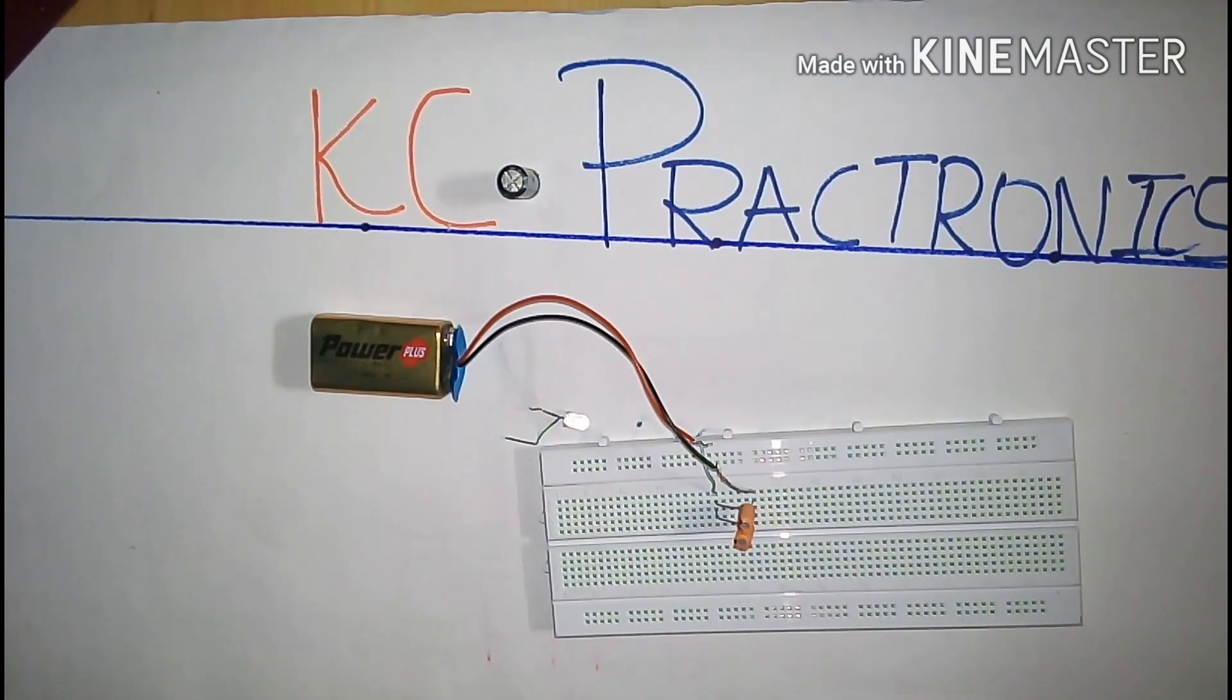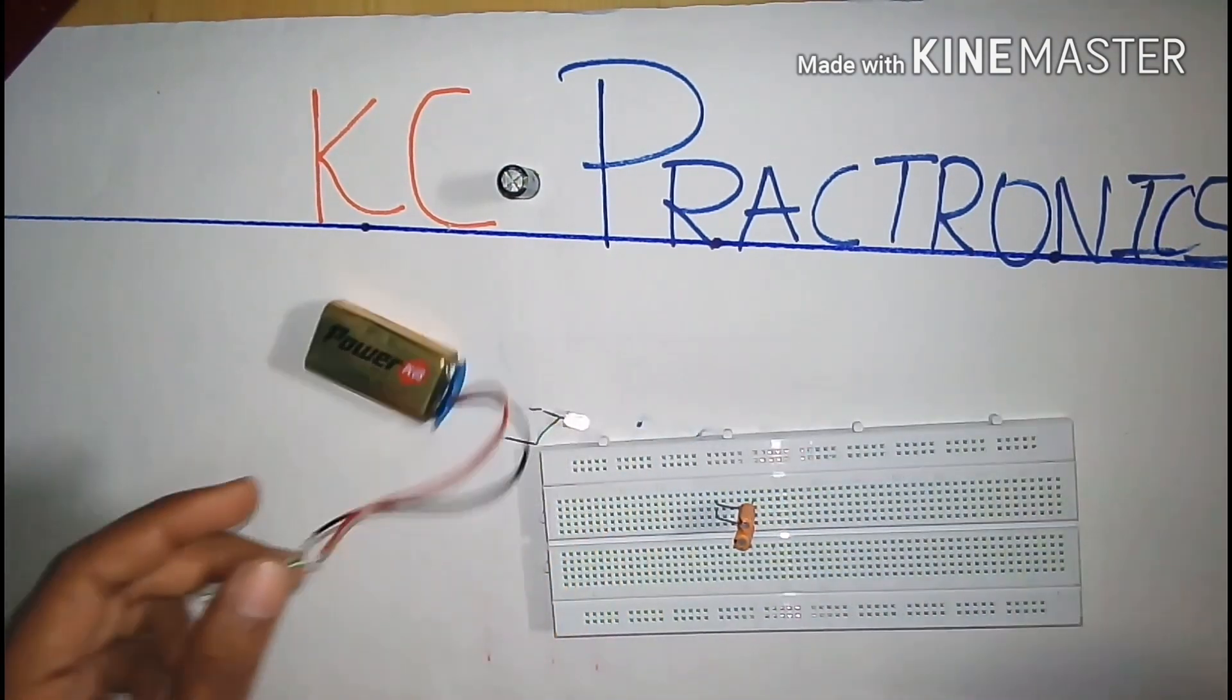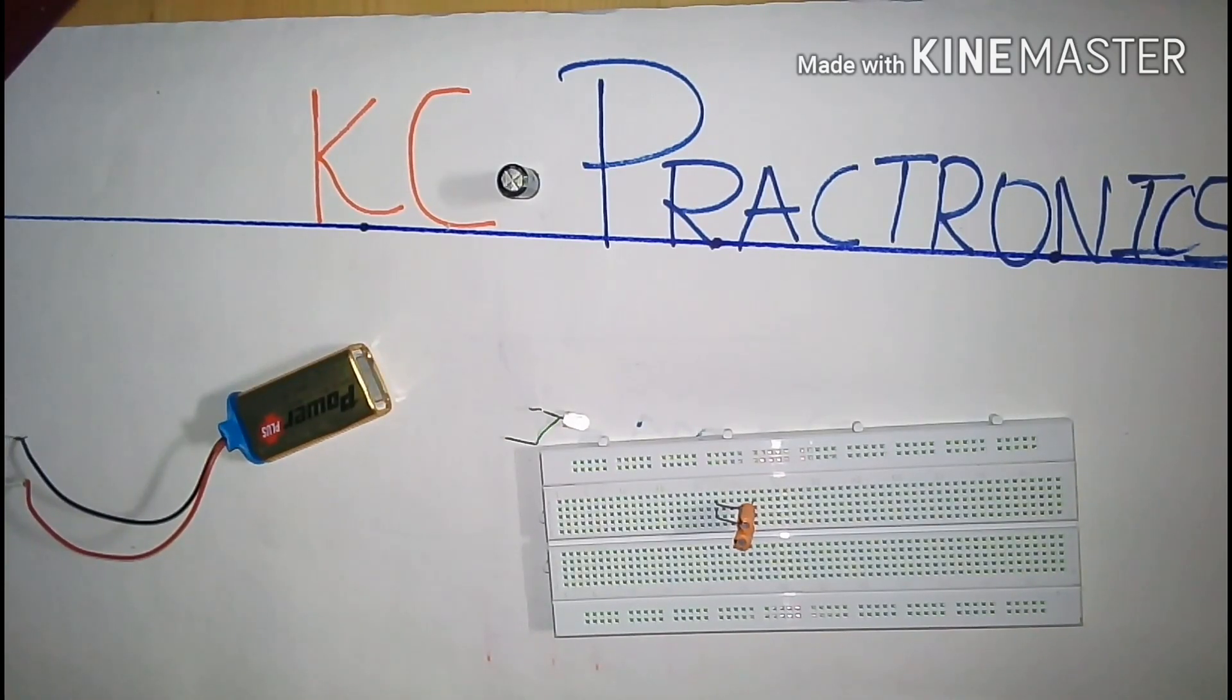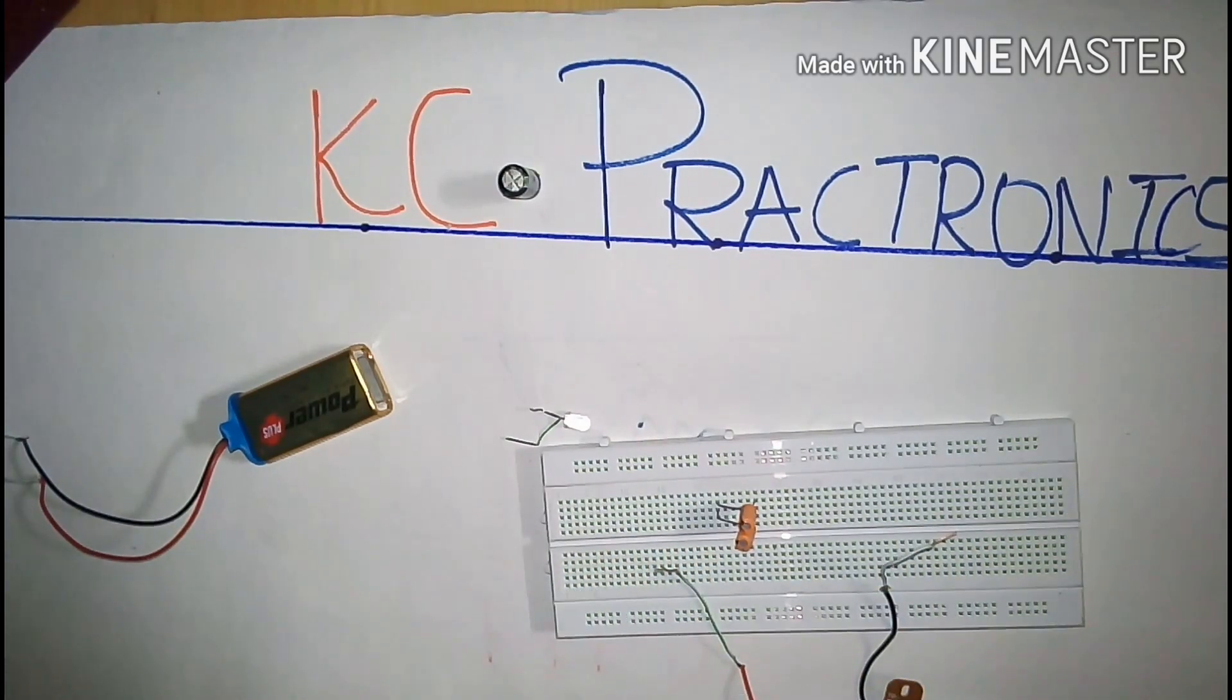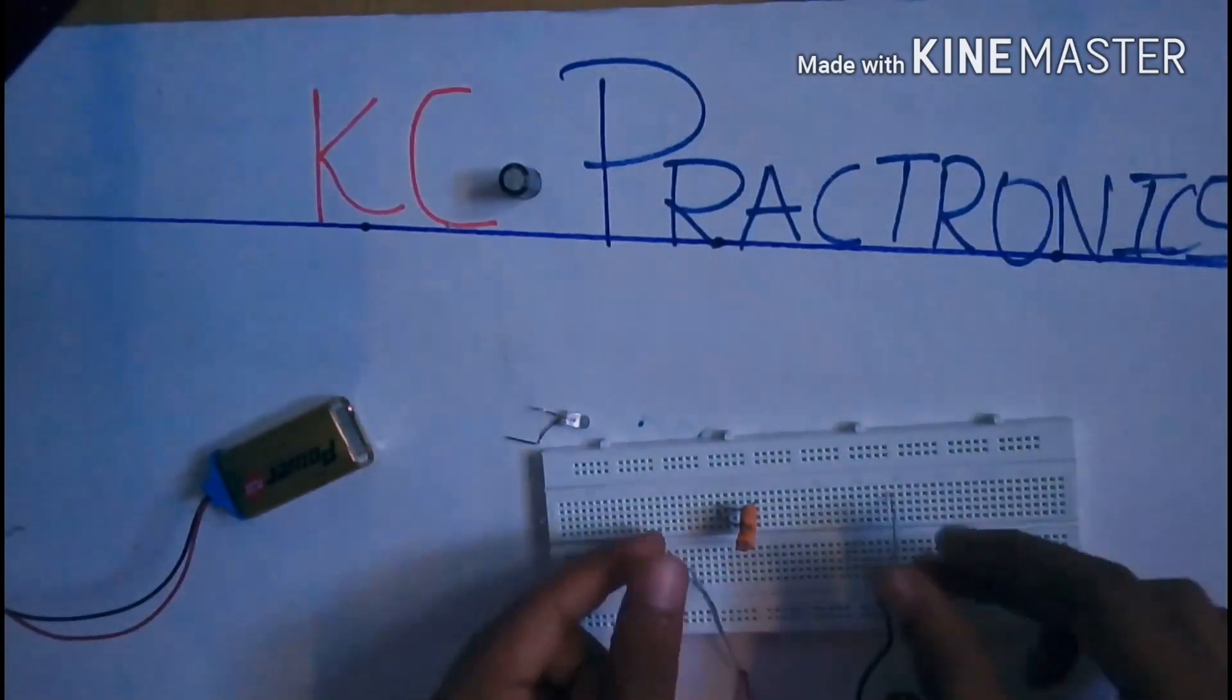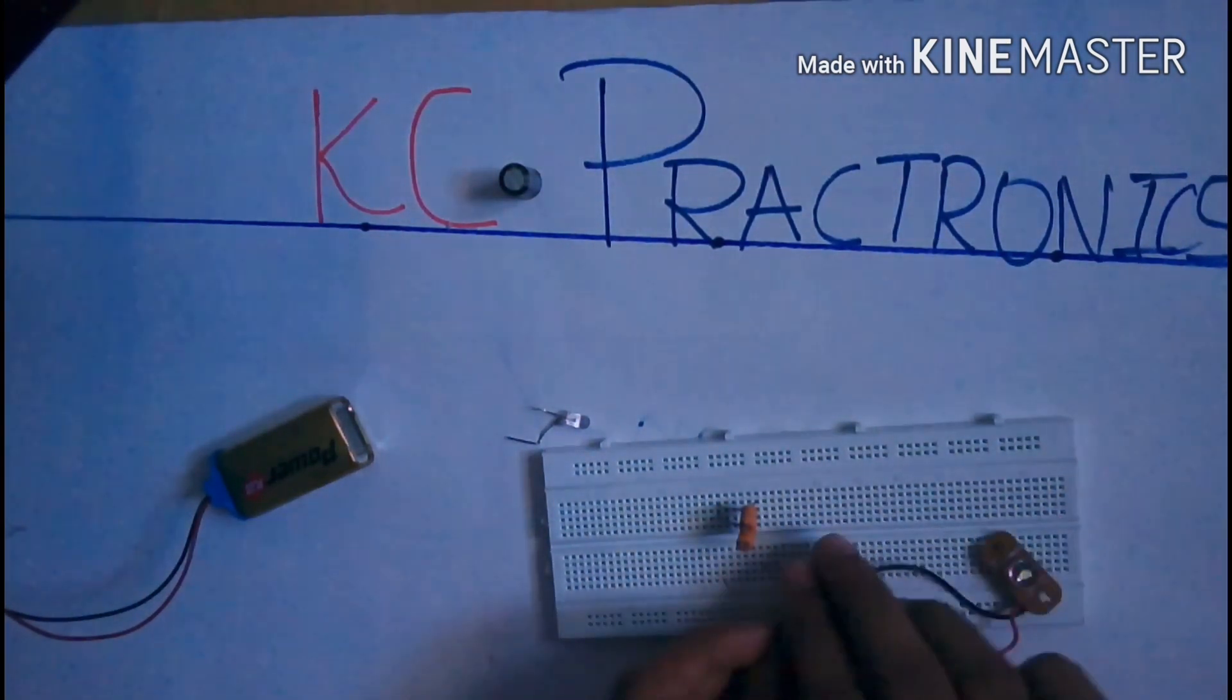Until now, the capacitor has been charged. Now, let us disconnect the DC power source from the capacitor and connect an LED to the capacitor. Let us observe what happens. Let us connect an LED in parallel with the capacitor and observe. Please keep observing.